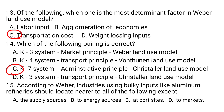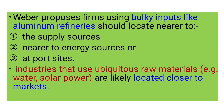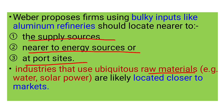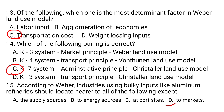Question number fifteen: According to Weber, industries using bulky inputs like aluminum refineries should locate nearer to all of the following EXCEPT: A) supply sources, B) energy sources, C) port sites, D) market sites. Weber proposes firms using bulky inputs should locate near supply sources, energy sources, or port sites. Industries using ubiquitous raw materials like water or solar power are expected to locate closer to markets. The correct answer is D.